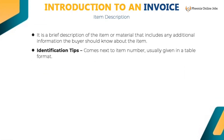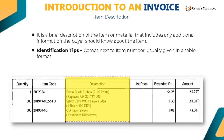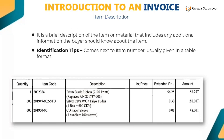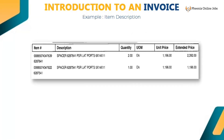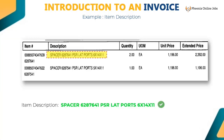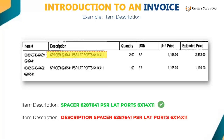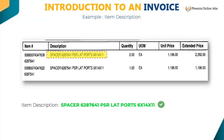Item description is a brief description of the item or material that includes any additional information the buyer should know. It comes next to item number, usually in a table format. Key only 'spacer 6287641PSR lockport 6x14x11' for this example — this is the first line description. Key as per the image shown in the snippet for all other lines. Do not key the word 'description.' If 'description' or 'material description' is already populated, then remove those words.